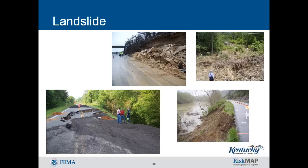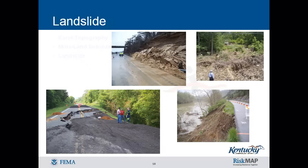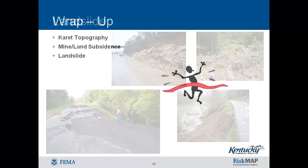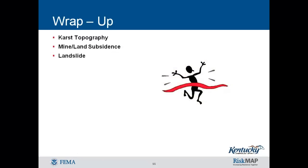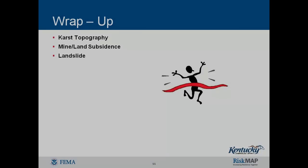In summary: unstable soils on moderate to steep slopes and over-steep slopes created for additional land development cause additional vulnerability to landslide. Karst topography results in channels and caves susceptible to surface collapse, forming sinkholes, and can also cause groundwater problems as rock formations are dissolved away. Mine subsidence is the movement of the surface due to collapse of mine workings underground, resulting in damage ranging from cosmetic to structural.